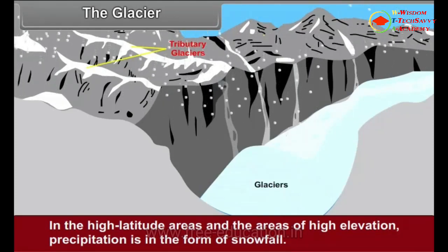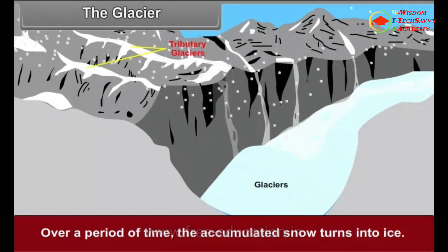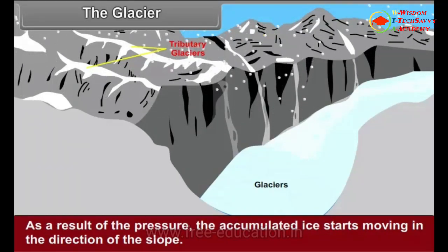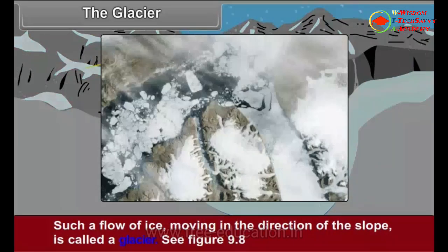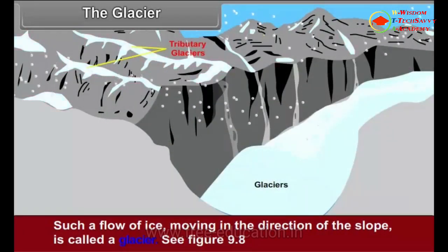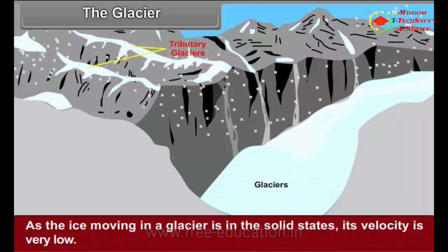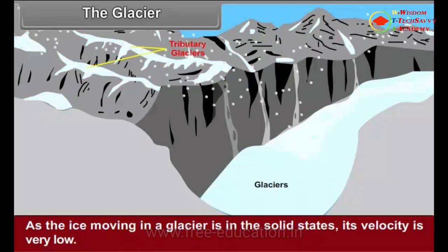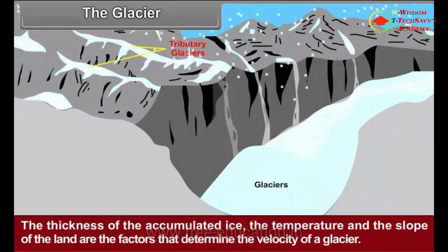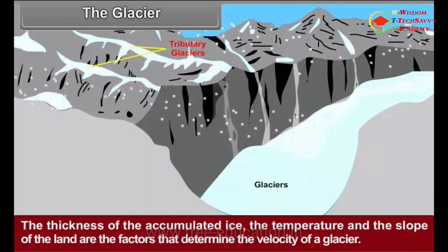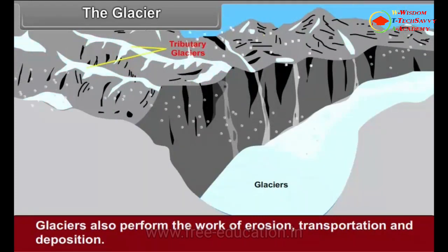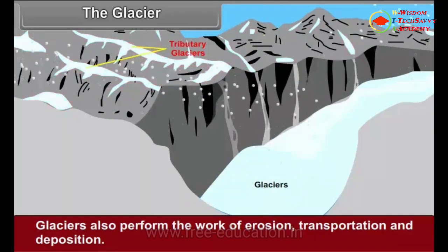The Glacier: In high latitude areas and areas of high elevation, precipitation is in the form of snowfall. Over a period of time, the accumulated snow turns into ice. As a result of pressure, the accumulated ice starts moving in the direction of the slope. Such a flow of ice moving in the direction of the slope is called a glacier. As the ice moving in a glacier is in the solid state, its velocity is very low. The thickness of the accumulated ice, the temperature and the slope of the land determine the velocity of a glacier. Glaciers also perform the work of erosion, transportation and deposition.